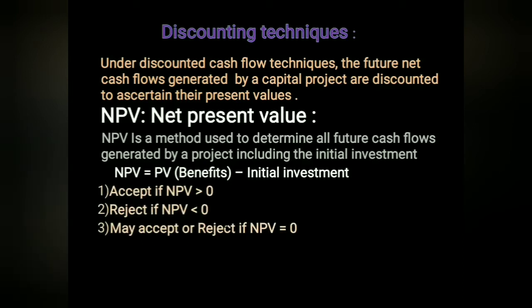The acceptance and rejection rules for NPV are: if NPV is greater than zero, accept the project; if NPV is less than zero, reject the project. If NPV equals zero, the decision to accept or reject can be taken by the company itself.